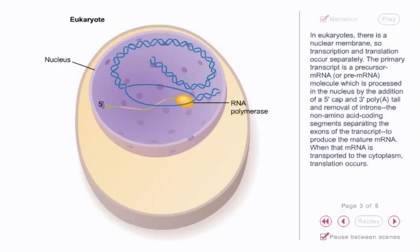In eukaryotes, there is a nuclear membrane, so transcription and translation occur separately. The primary transcript is a precursor mRNA molecule, which is processed in the nucleus by the addition of a five-prime cap and three-prime poly-A tail, and by the removal of introns, the non-amino acid coding segments separating the exons of the transcript, to produce the mature mRNA. When that mRNA is transported to the cytoplasm, translation occurs.